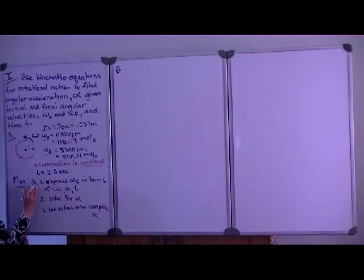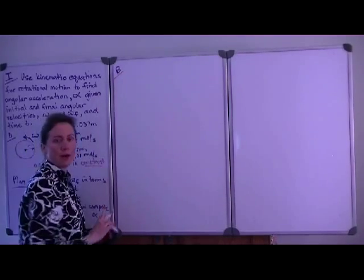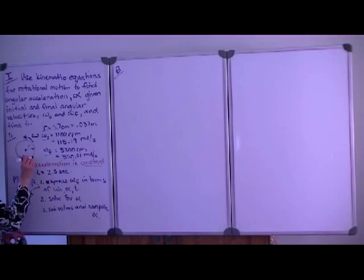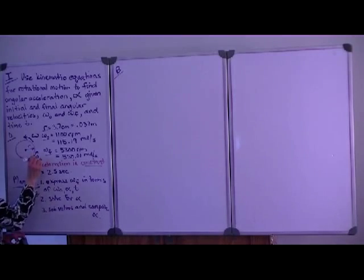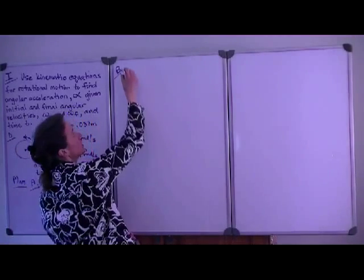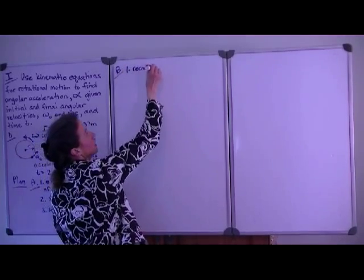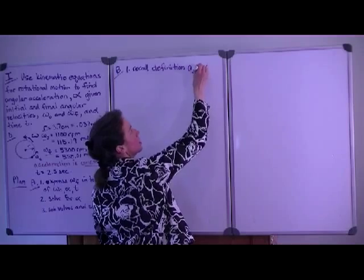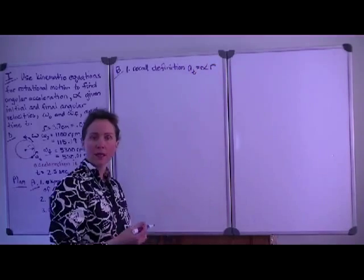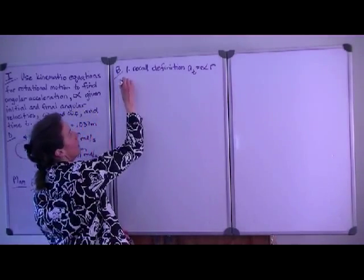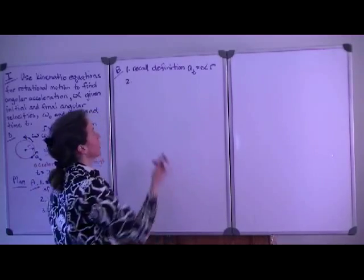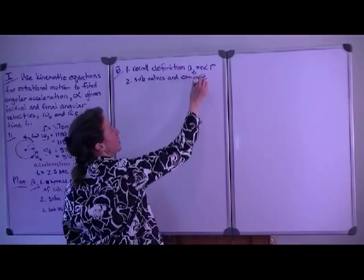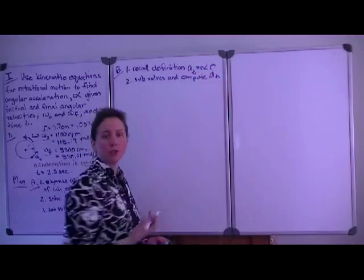Now our second task, that was task A, finding the angular acceleration. Task B is to find the translational acceleration of a point on the edge of the crankshaft. So what does that look like? If we pick any point, it has a translational acceleration that can be expressed by the definition of translational acceleration. So the first step is to recall the definition relating translational and rotational acceleration, which is that the translational acceleration is the rotational acceleration times the radius of the point that you're interested in. And then, that's already in the form we need since we're looking for translational acceleration. So we will substitute values and compute that translational acceleration. Now we'll substitute non-rounded values and then we'll report a final answer to two significant digits.